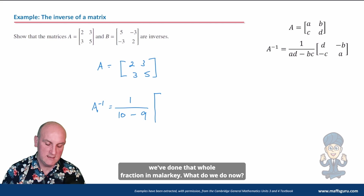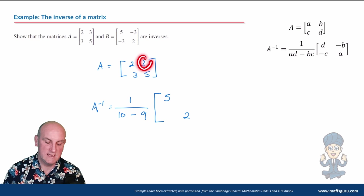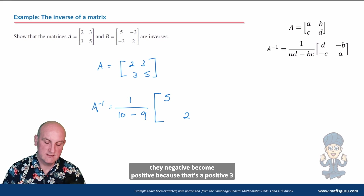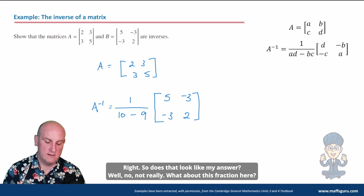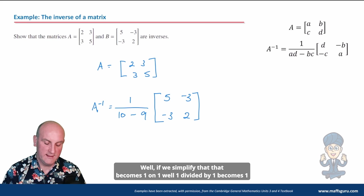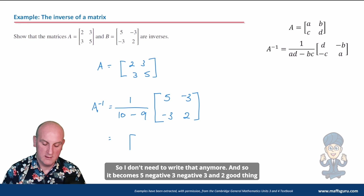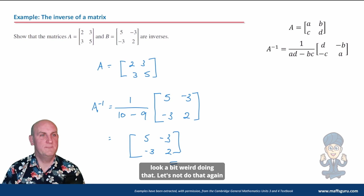Now we swap the corners: the two becomes five and the five becomes two. The off-diagonal entries are positive threes, so they become minus three and minus three. The fraction simplifies to one over one, which is just one, so we don't need to write it. The result is the matrix [5, -3; -3, 2] — which matches the given matrix B. Done!